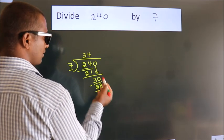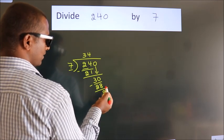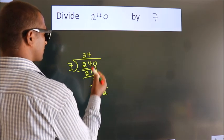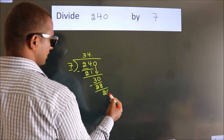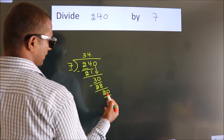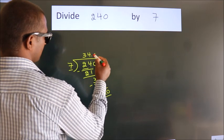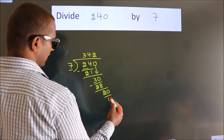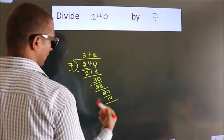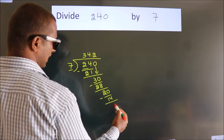After this, no more numbers to bring down. So what we do is, we put dot, take 0. So 20. A number close to 20 in the 7 table is 7 times 2, which is 14. Now we subtract. We get 6.